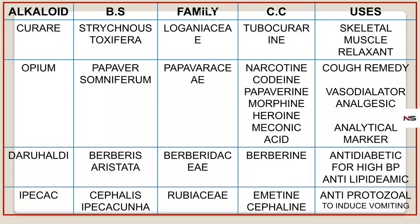The second drug is Opium. Its biological source is Papaver somniferum, belonging to the family Papaveraceae. The chemical constituents are Narcotine, Codeine, Papaverine, Morphine, Heroin, and Meconic Acid.